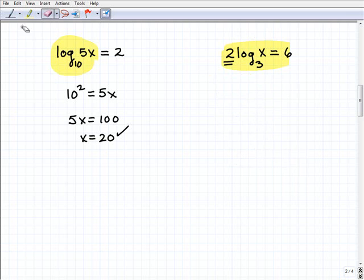Now what we could have done is you have this two in front of the log base 3x equals 6. You can divide both sides of the equation by two. And of course, when I do that, I get rid of the two in front of the log. And now I just have log base 3x equals three. You see why that is? I just divided both sides of the equation by two. So this log equation is equivalent to this one right up here.